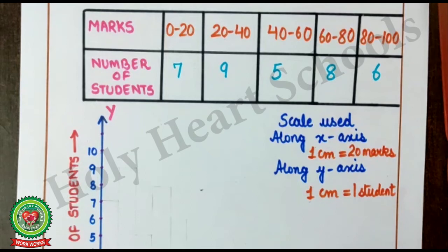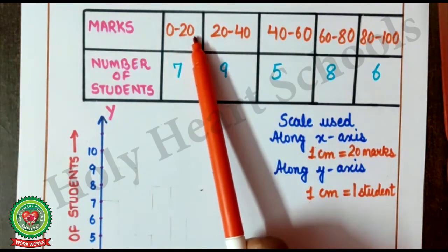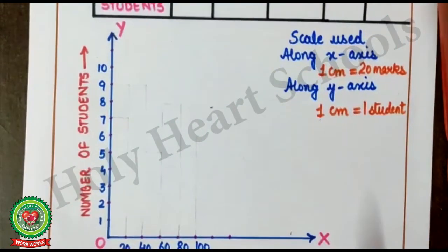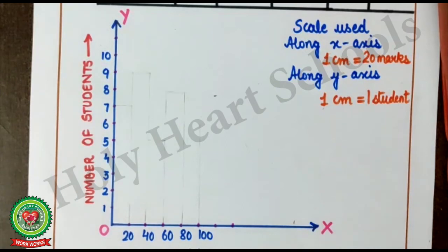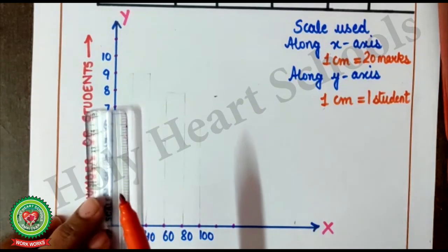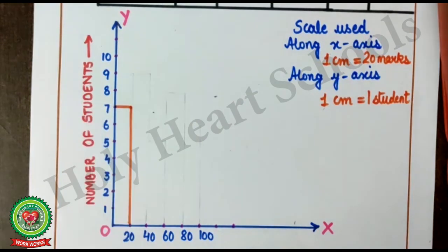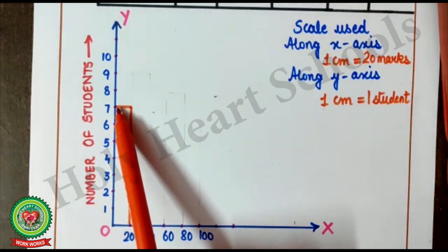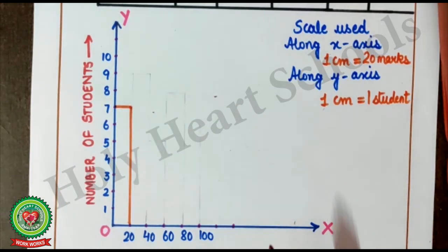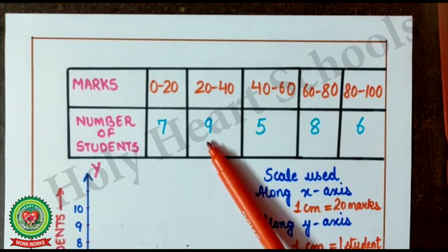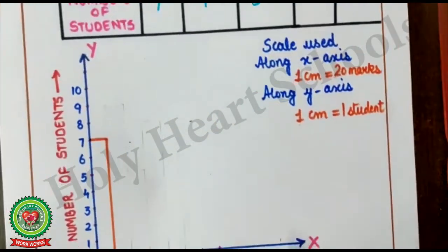Now, let's draw histogram. Now, here, 0 till 20. Number of students. 7. So, first of all, we will draw bar till 7. Here, put scale. Till 7, you will draw one bar. So, here, we have drawn 0 till 20. Number of students 7. Now, the next information is 20 till 40. 9.